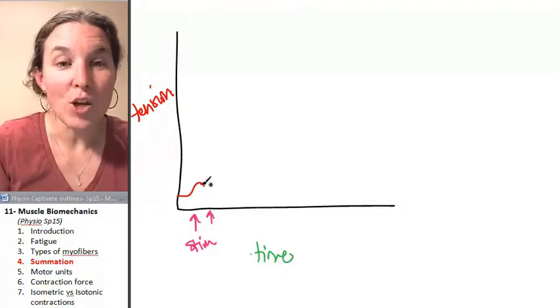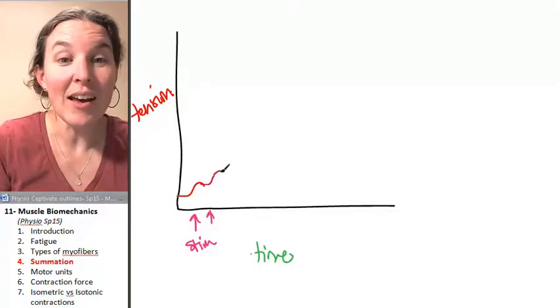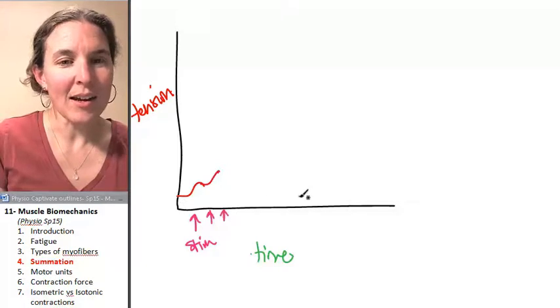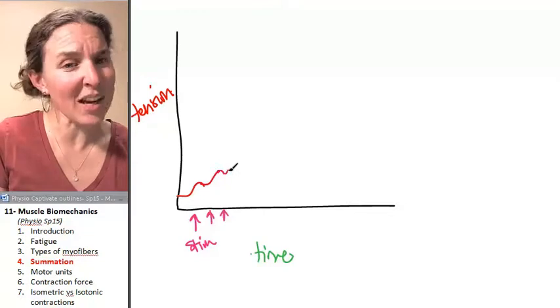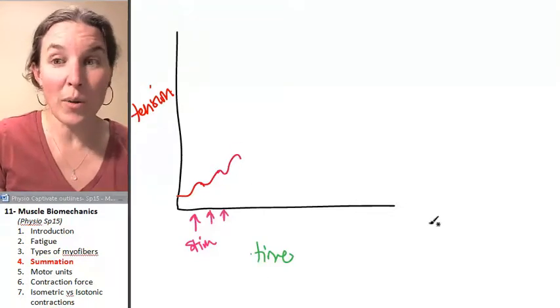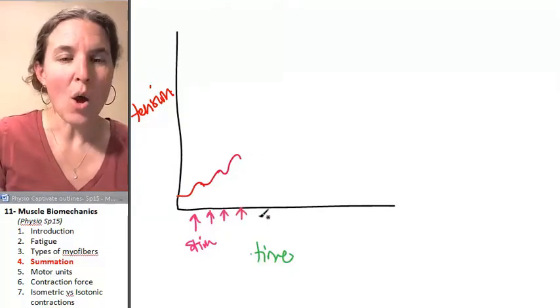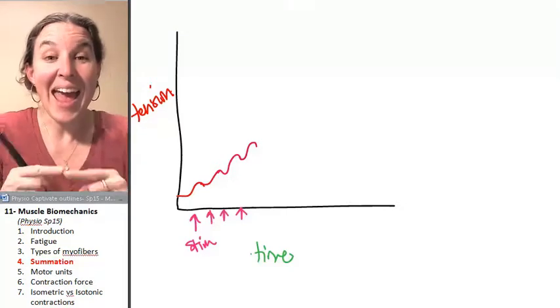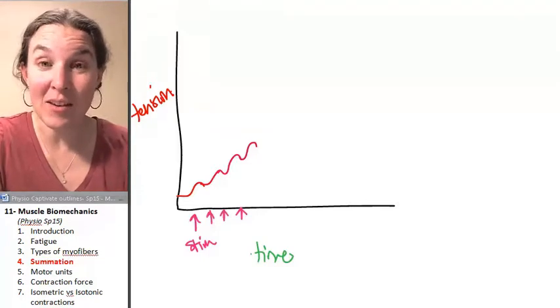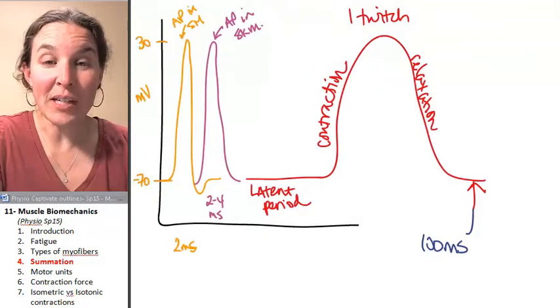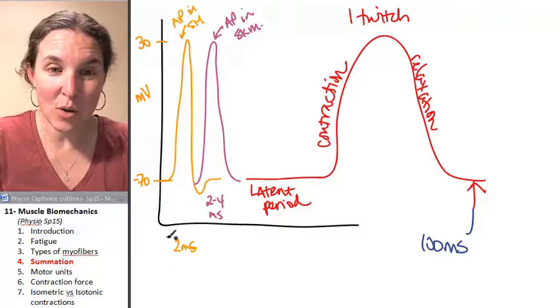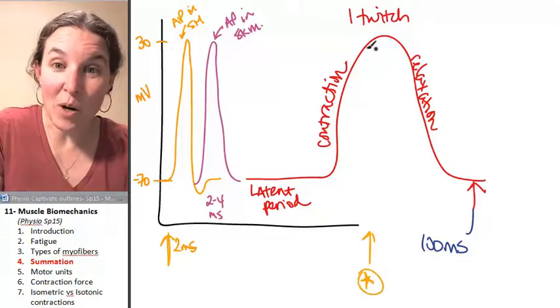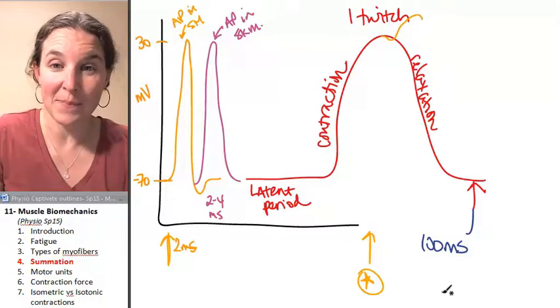Here comes another stimulus. Guess what happens? You never relax. You actually increase the tension. What? Seriously? Yeah. Let's not let ourselves relax. Let's throw another stimulus in there. We start to relax and then we're like, oh dang it, I really was looking forward to that couch. Throw in another stimulus. Do you see what's happening? We're throwing in a stimulus before the muscle fiber can actually put everything back to where it was.